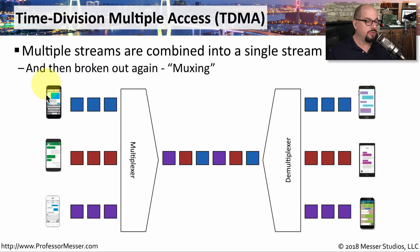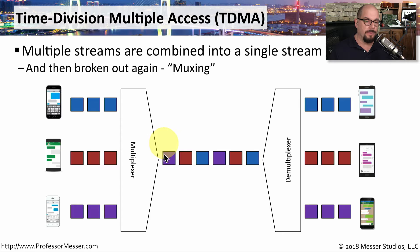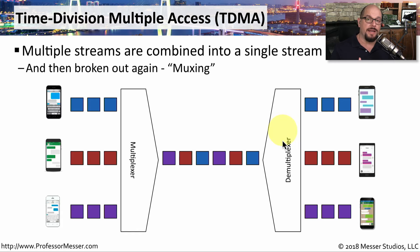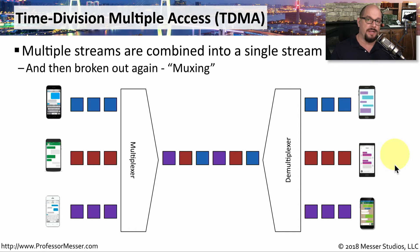You would have multiple streams. You could see each of these phones on the left side communicating over a blue, a red, and a purple communication. The multiplexer blends those together and gives everybody a certain time stamp that's available to them. On the other side, that signal is demultiplexed, and you would break out the blue, the red, and the purple stream so that they can be sent to their normal destinations.